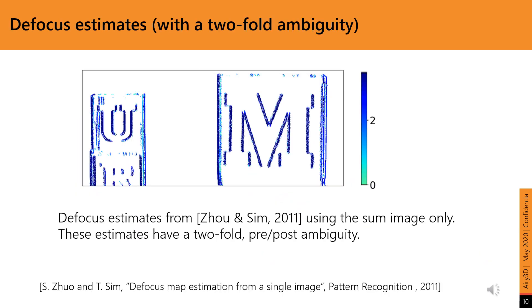As we mentioned towards the start of the presentation, we used Zuo and Sim's method to estimate our defocus values for the non-horizontal edges. These ambiguous defocus estimates are then combined with our pre-post edge map from the previous slide to obtain defocus estimates that are free from any two-fold ambiguity.